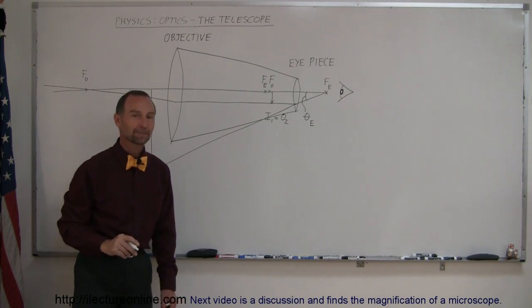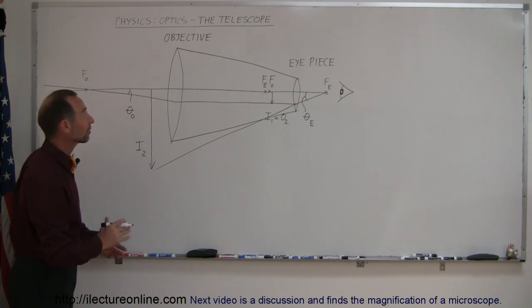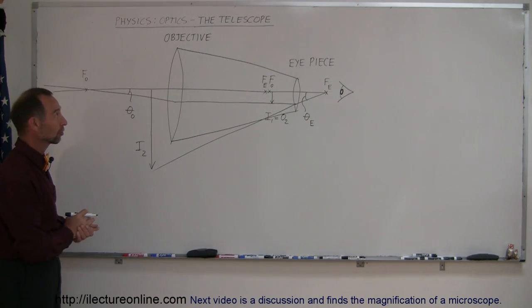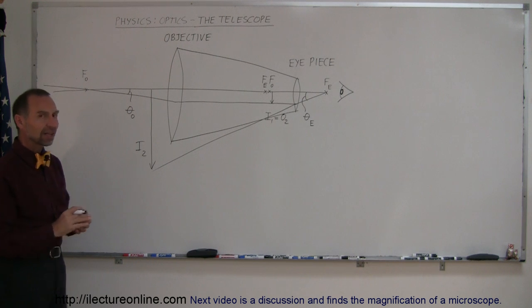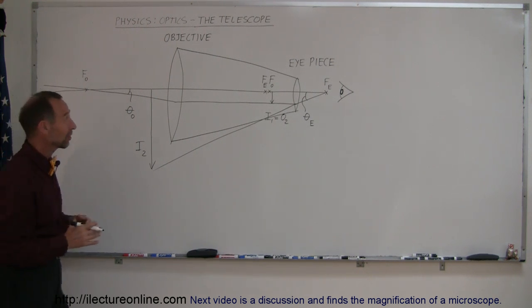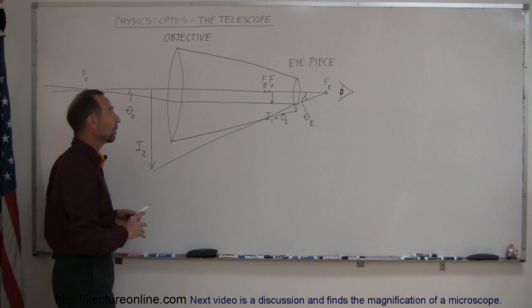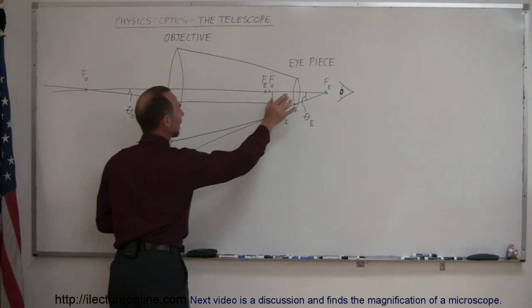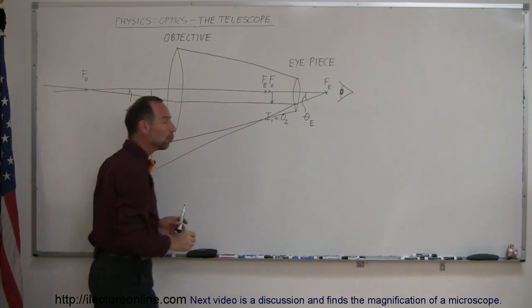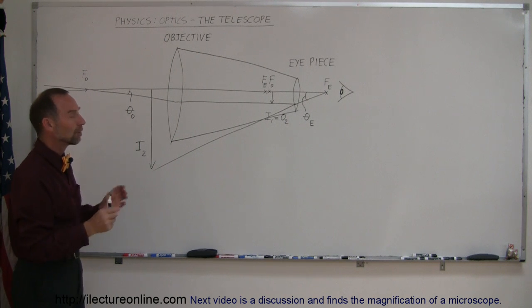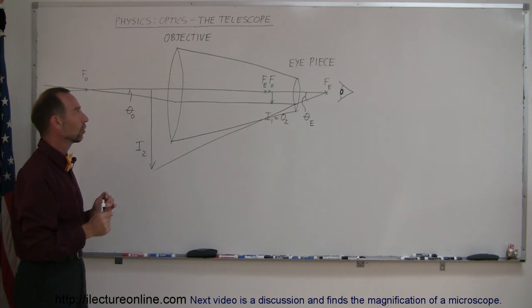Welcome to our lecture online. Here's our next optical instrument: the telescope. There's actually not a lot of difference between a telescope and a microscope, although maybe size-wise there is. They both have an objective lens and an eyepiece, and really the only difference between the two is where the lenses are positioned.